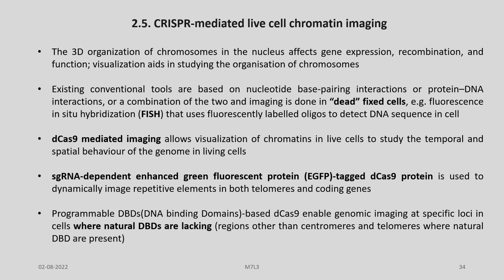The 3D organization of chromosomes in the nucleus affects gene expression, recombination, and function. Visualization aids in studying the organization of chromosomes. Existing conventional tools are based on nucleotide base pairing interactions or protein-DNA interactions, and imaging is done in fixed cells — for example, fluorescence in situ hybridization (FISH), which uses fluorescently labeled oligos to detect DNA sequences in cells. We can use CRISPR for live cell chromatin imaging by modification of the CRISPR-Cas system.